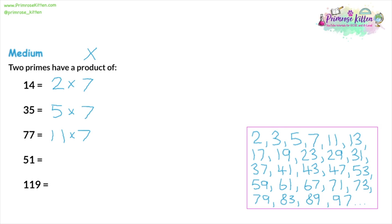For 51, there are no easy shortcuts — it's not even, doesn't end in 5 or 0, and isn't a repeating number. So we try dividing by every prime, starting with the smallest. Let's divide 51 by 3 using the bus stop method: 3 into 5 goes 1 remainder 2; 3 into 21 goes 7 exactly. So 51 divided by 3 is 17. Since 17 is also a prime number, we have our answer: 51 is a product of 3 and 17.